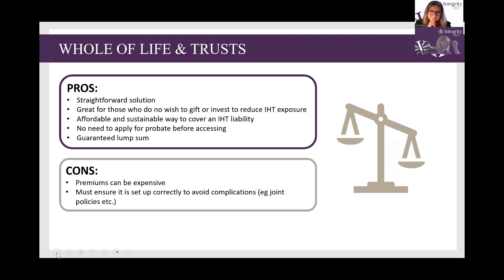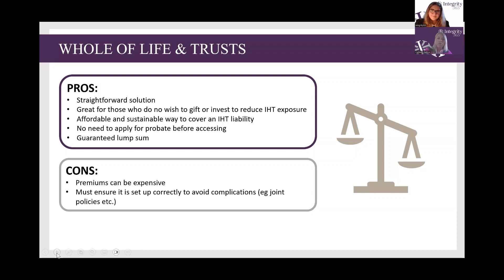Your advisor will be able to explain whole of life and trust in more detail and get quotes. Some people say they can't afford full coverage because their inheritance tax liability is quite large or they're in poor health, so it might be more expensive. But you could ask your advisor how much cover you can get for a set amount per month. That way you've at least got some cover in place, meaning part of the bill would be paid in the event of death. The next thing we're going to do is go through a case study.